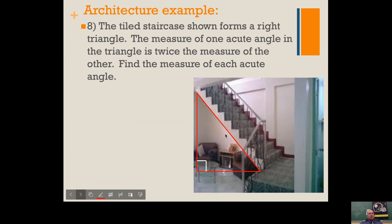We're going to try an example using this - an architecture example. The tiled staircase shown forms a right triangle. The measure of one acute angle in the triangle is twice the measure of the other. Find the measure of each acute angle. Well, if one angle is twice the other, let's call one of them x. The other one's going to be twice as big, so we'll call it 2x.